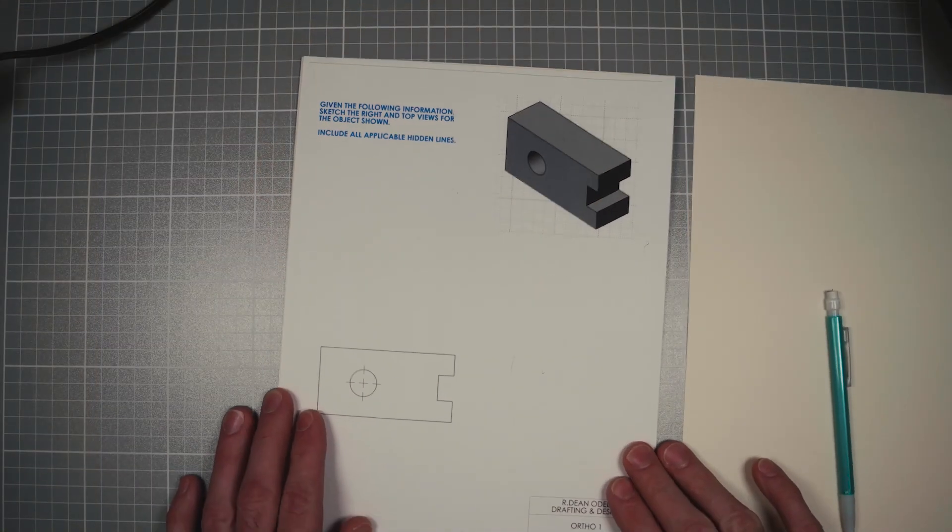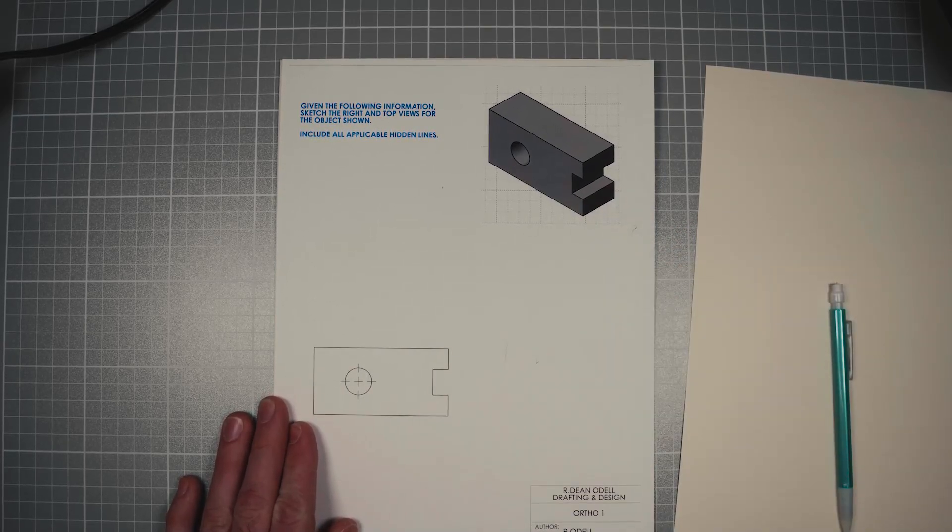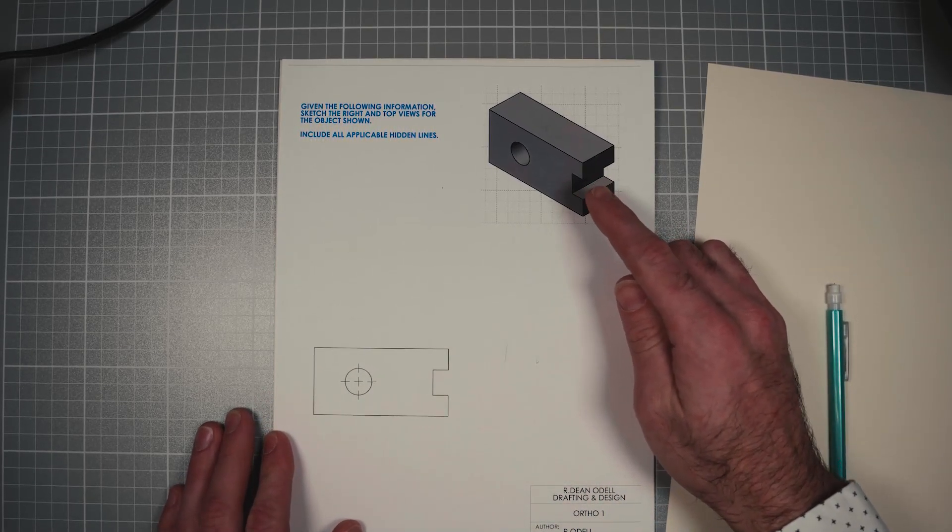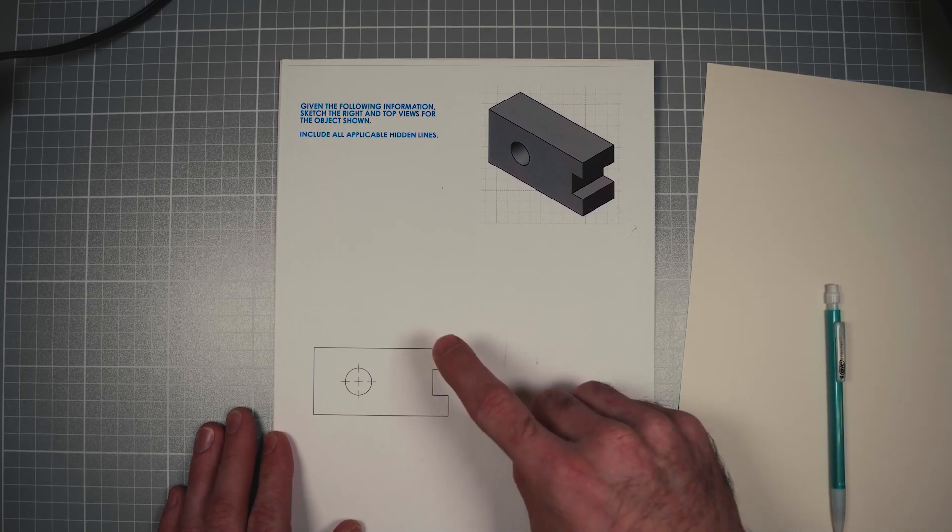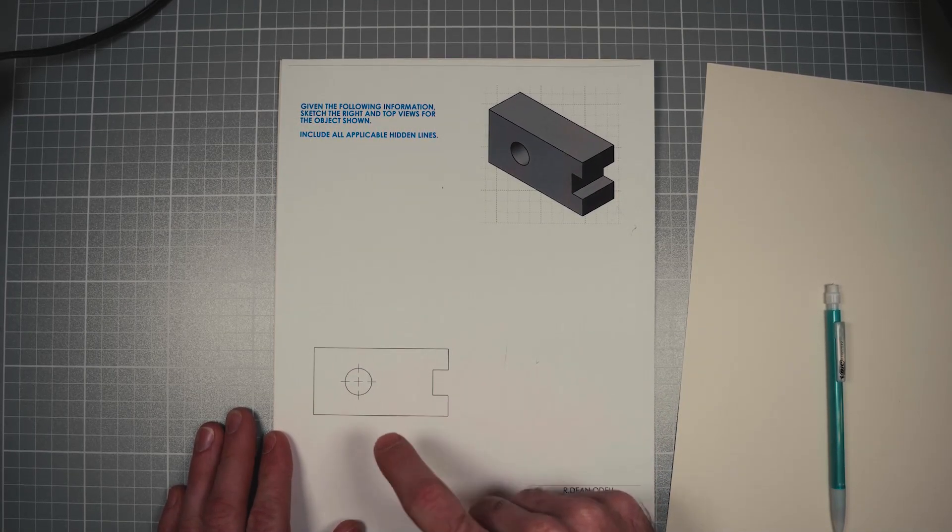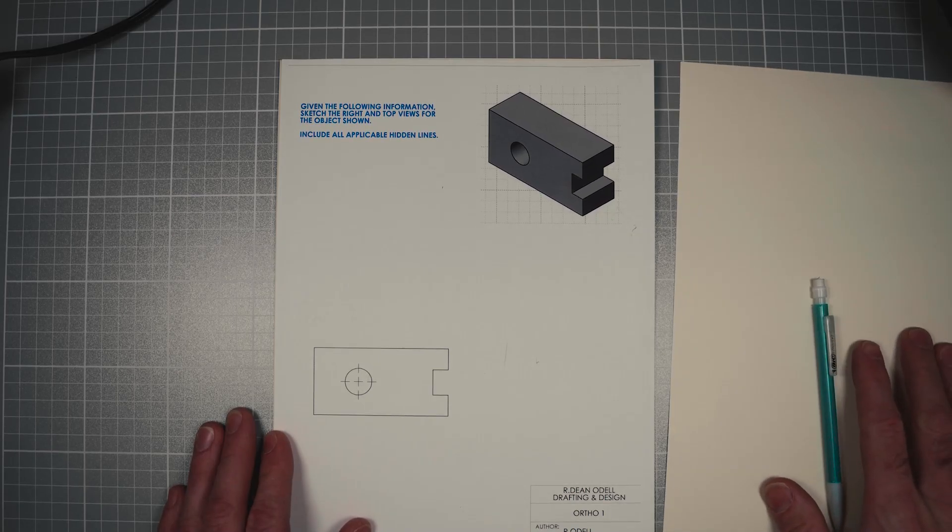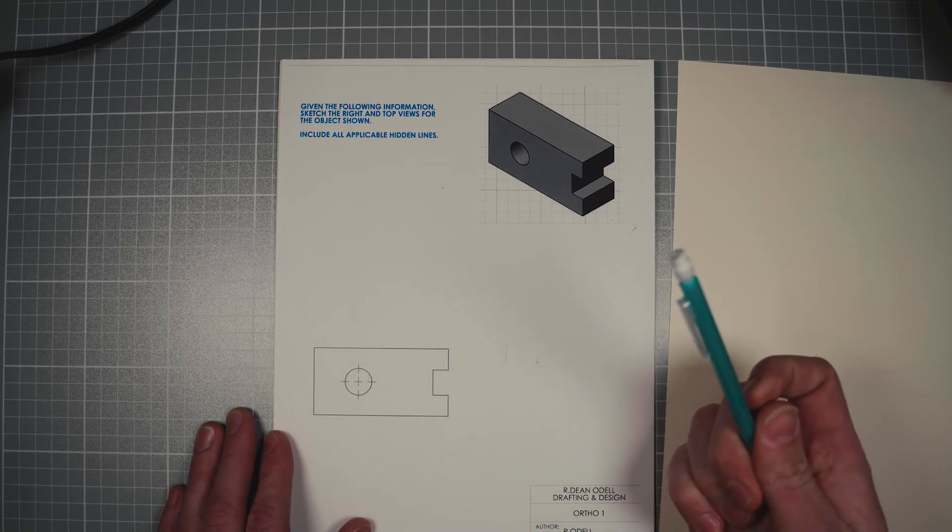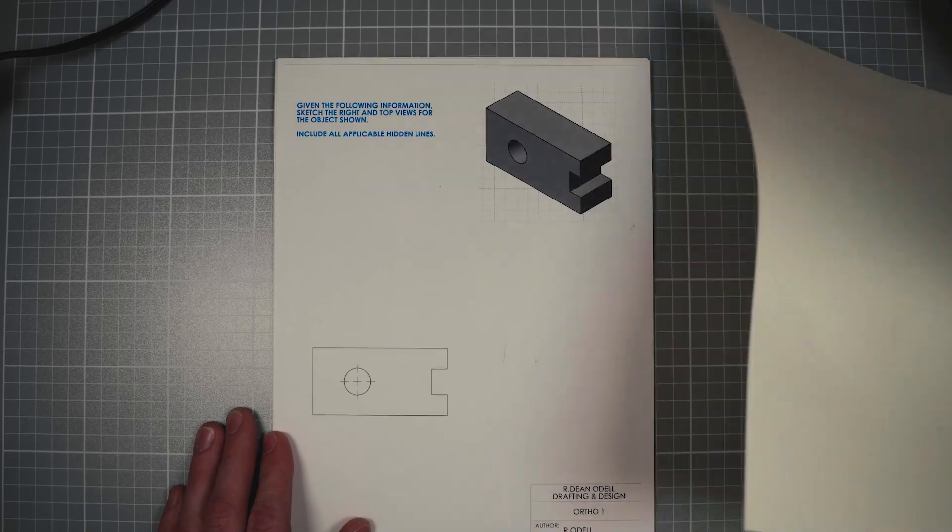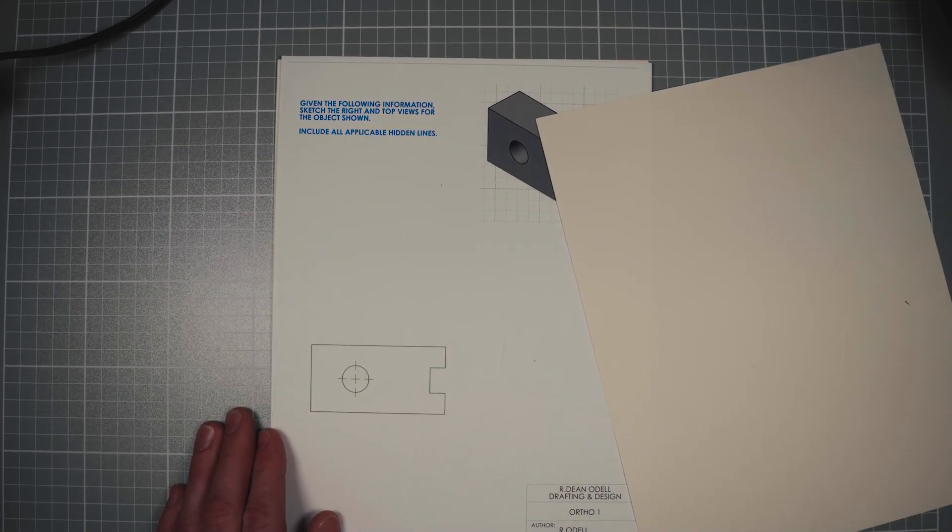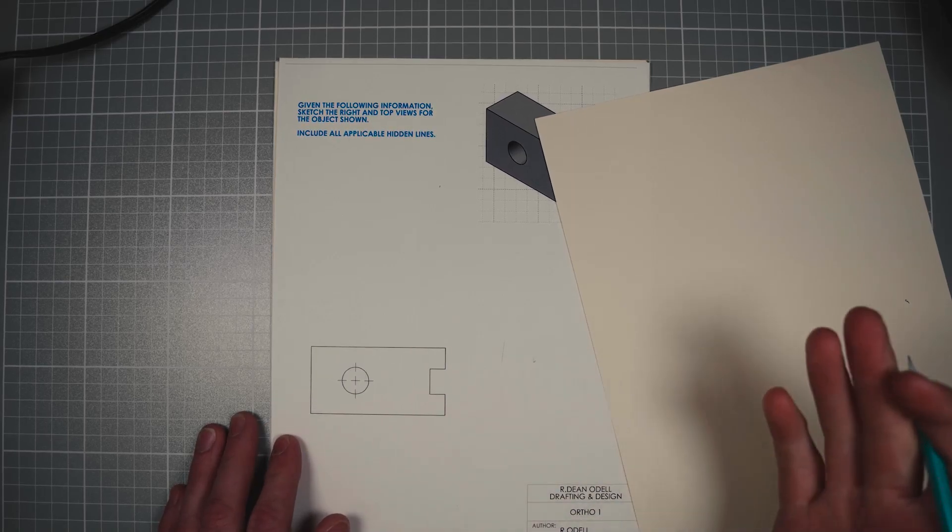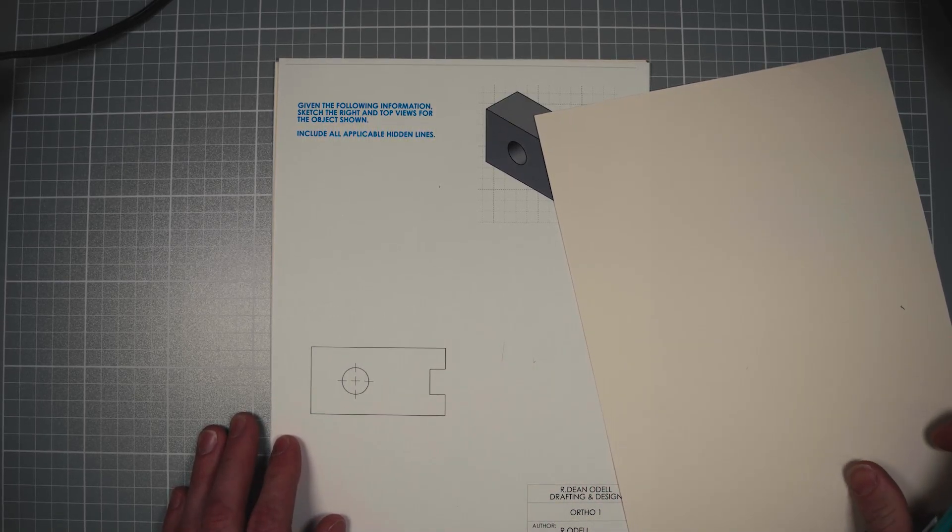So let's move to the paper here. We've got a block with a hole in it and a little cut on this side. We're gonna make a front view here and a right view here and a top view here from this front view. Now the only supplies I have are a mechanical pencil and a piece of card stock. Now you can use a ruler if you want, you can use a fancy pencil, but this is enough for what I'm gonna do today.